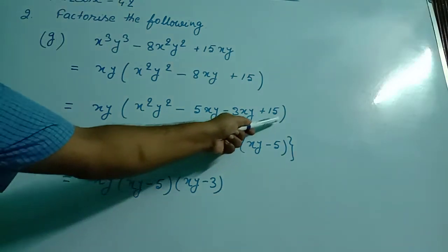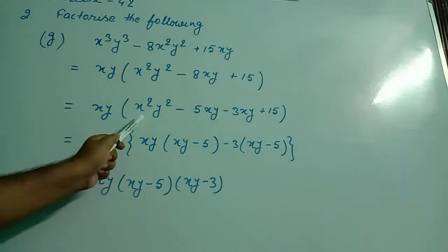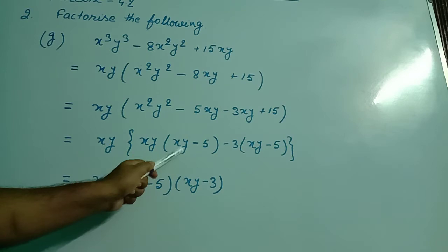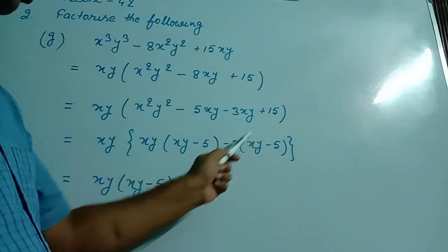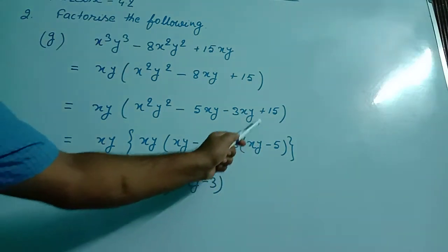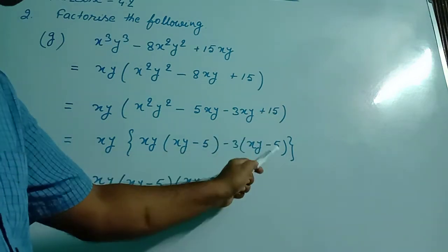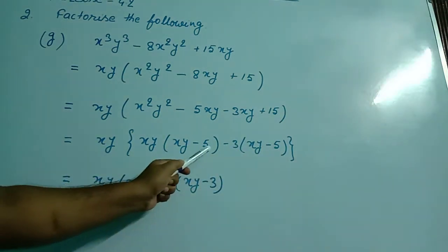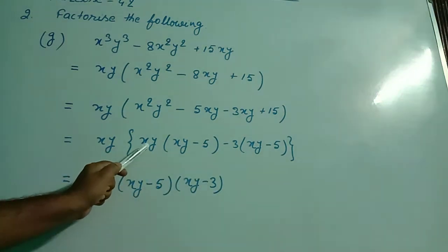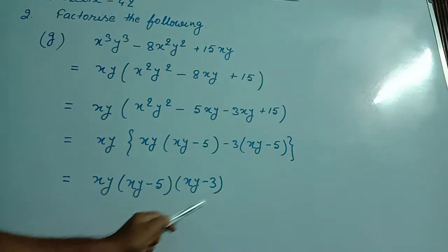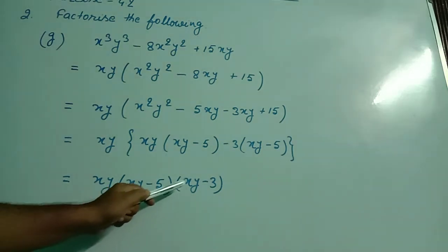I wrote these splitted terms. From the first two terms, I took xy as common, so xy is left minus 5. From the last two terms, I took minus 3 as common, so xy is left minus 5 again. We see that xy minus 5 is common. I wrote xy(xy - 5), and what is left — xy minus 3 — I wrote inside the bracket. So the factors of this given equation became xy(xy - 5)(xy - 3).